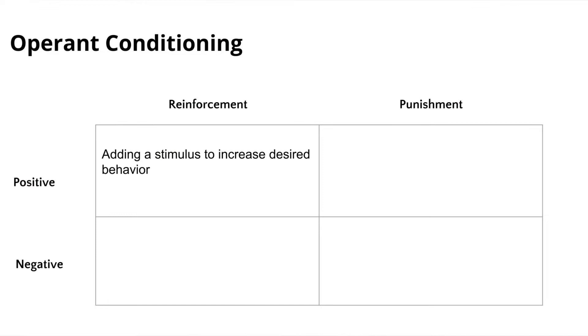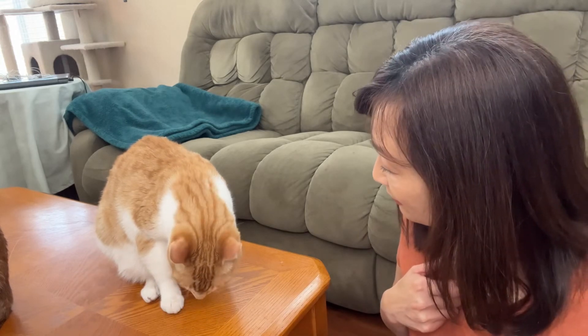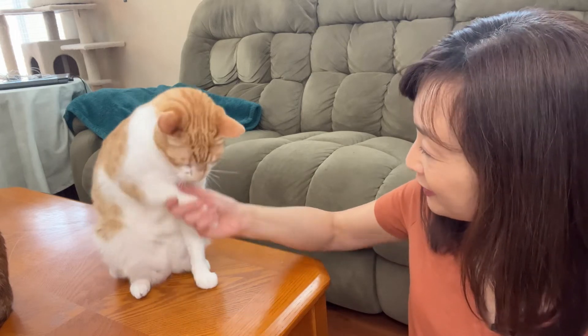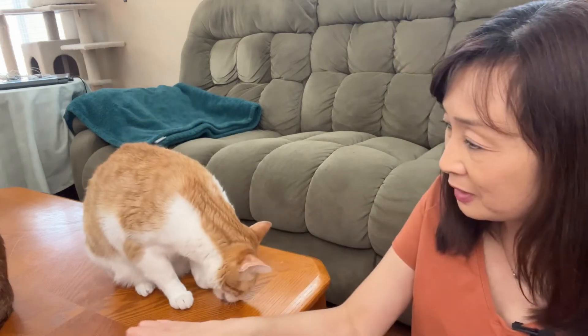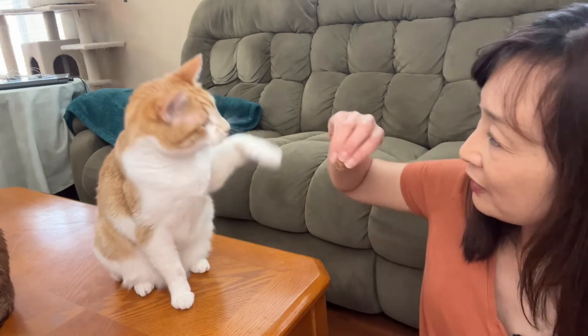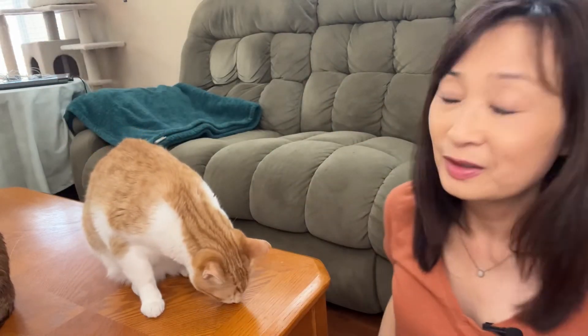Positive reinforcement is a behavior that precedes the reward — for example, receiving a treat for shaking paws. Loki, can you shake? Good boy. Can you shake other hand? Good boy. Loki, up. Good boy. That is positive reinforcement — a behavior that precedes the reward, and they know that after they perform the behavior they will receive their reward.